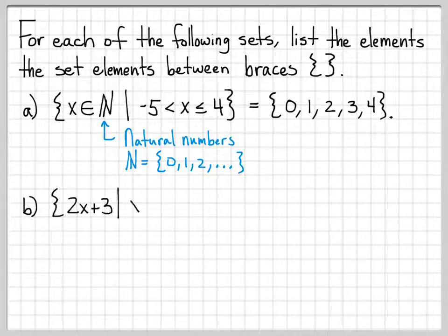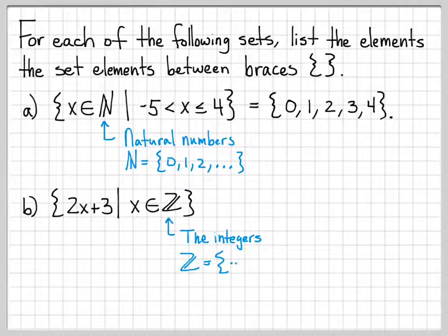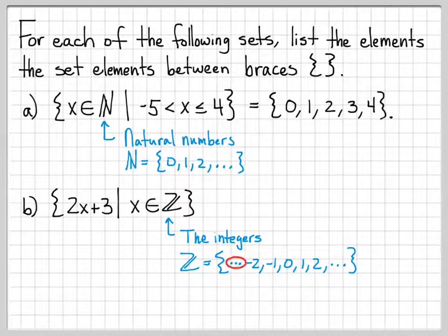Let's do another one. Part B is the set {2x + 3 | x ∈ ℤ}. We know what ℤ is — it's the set of integers: ..., -2, -1, 0, 1, 2, ..., going to negative infinity in steps of 1 and all the way up as well.